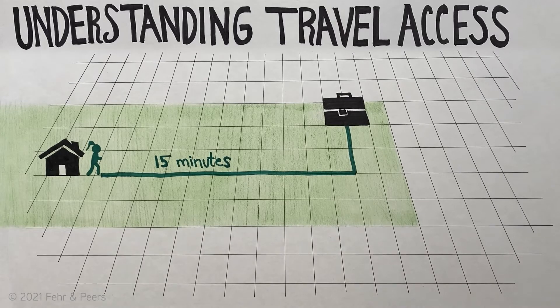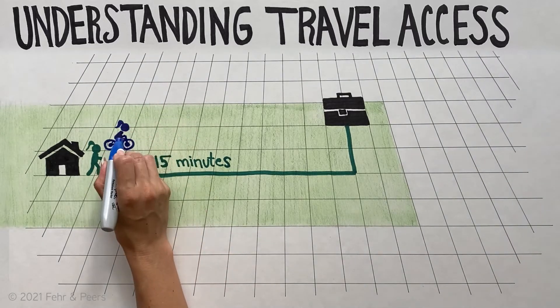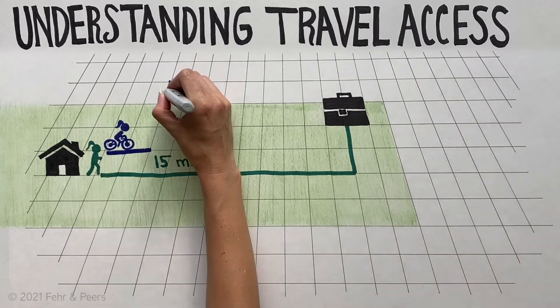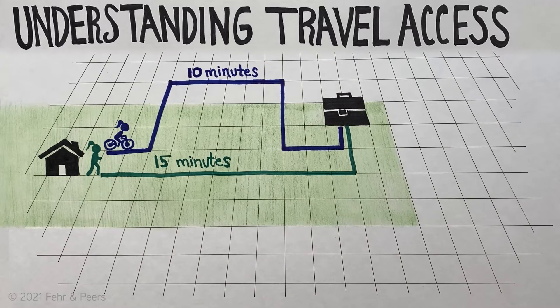She typically walks to work because she does not feel safe biking on the roads. If a protected bike lane was added along Ava's route, her mobility would increase as she could cut one-third of the time off her trip and feel safer on her bicycle.